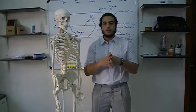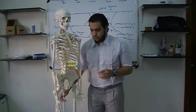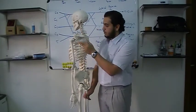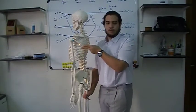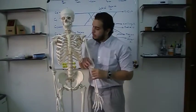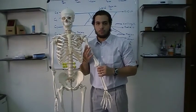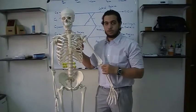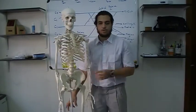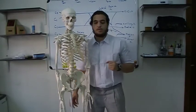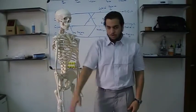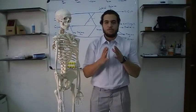The next muscle is teres major. It originates from the inferior angle of the scapula — the scapula has a superior angle and an inferior angle. Teres major comes from the inferior angle and attaches to the medial lip of the intertubercle groove on the humerus. It's supplied by the lower subscapular nerve, and its functions are adduction and medial rotation — it brings your hand down and medially rotates it.